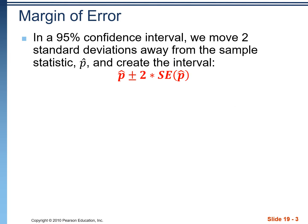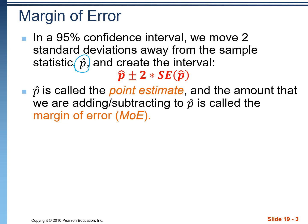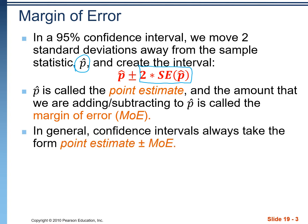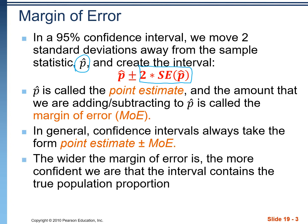We always start a confidence interval by taking a sample and getting a result. That gives us our sample statistic, p-hat. In a 95% confidence interval, we're moving two standard deviations away from that sample statistic. The p-hat is called the point estimate — it's our best guess about what the population parameter actually is. The amount that we're moving away from that point estimate is called the margin of error. The general form for every confidence interval is: point estimate plus and minus a margin of error. The wider this margin of error is, the more confident we are that our interval actually contains the true population proportion.